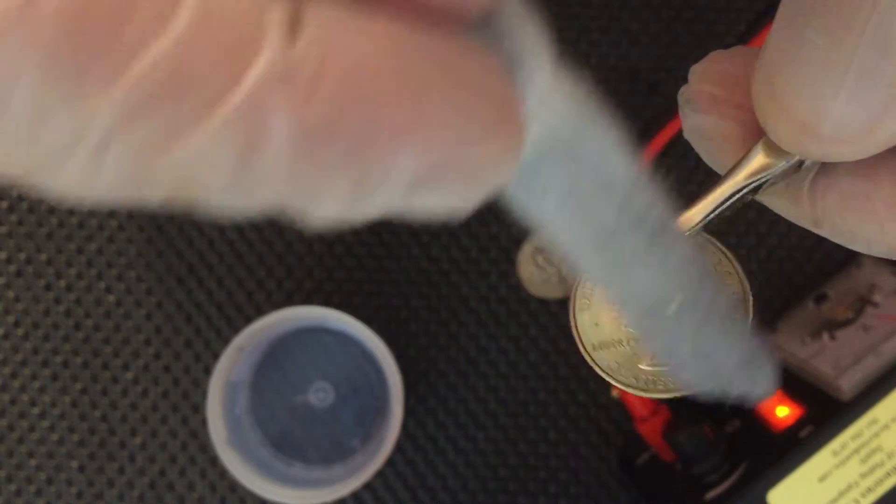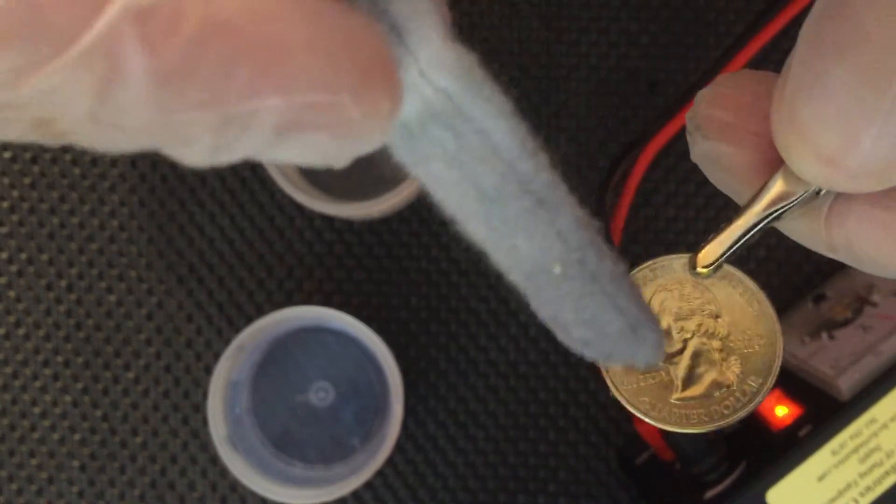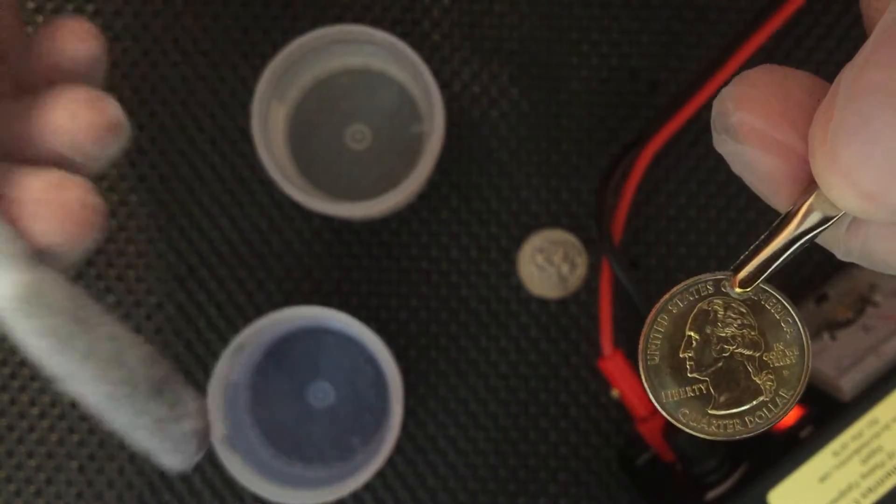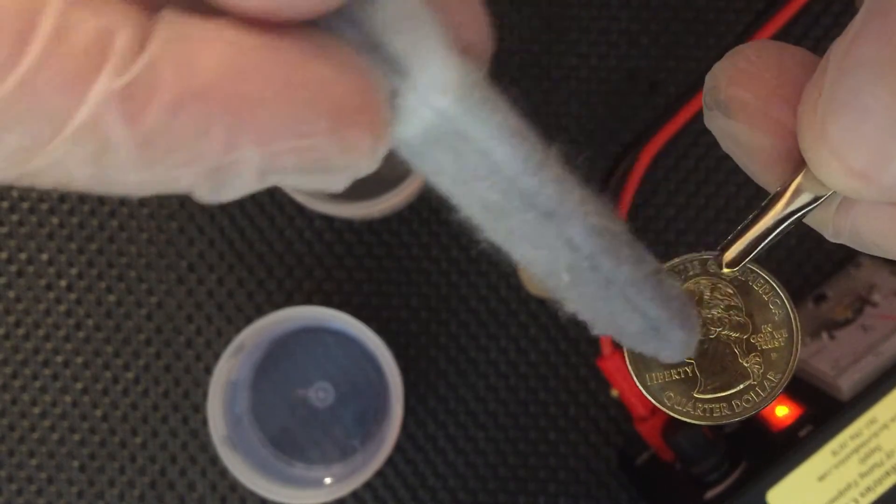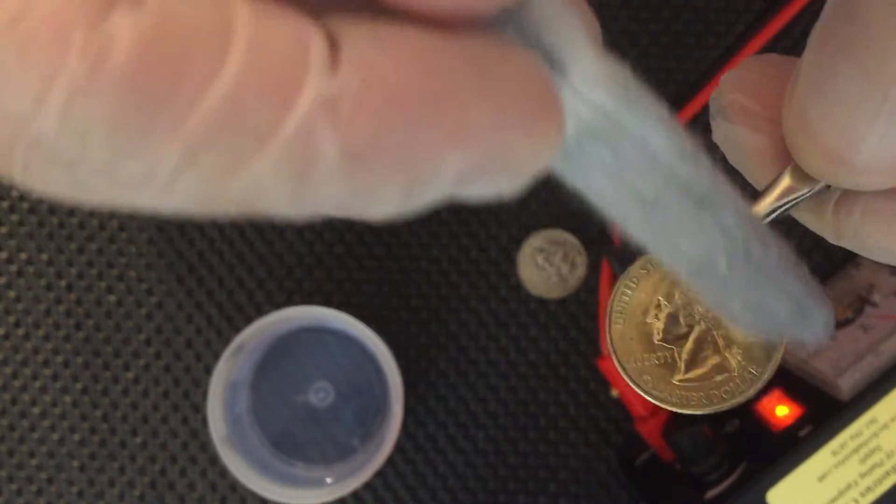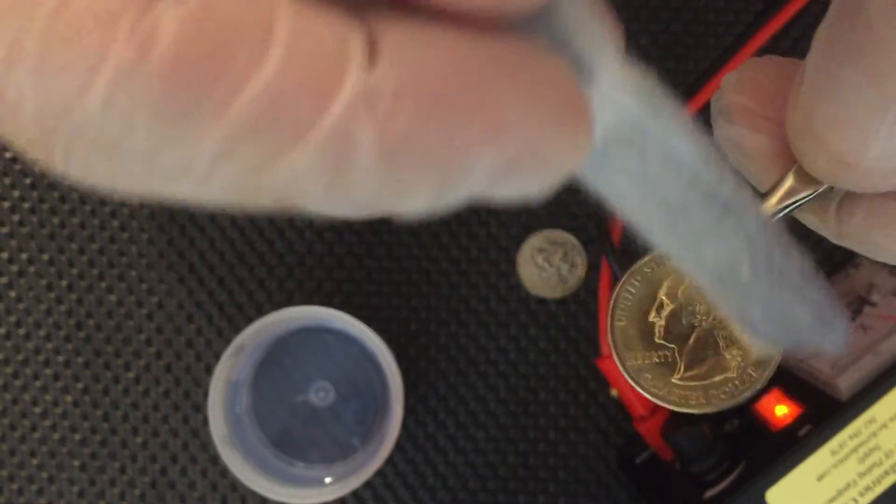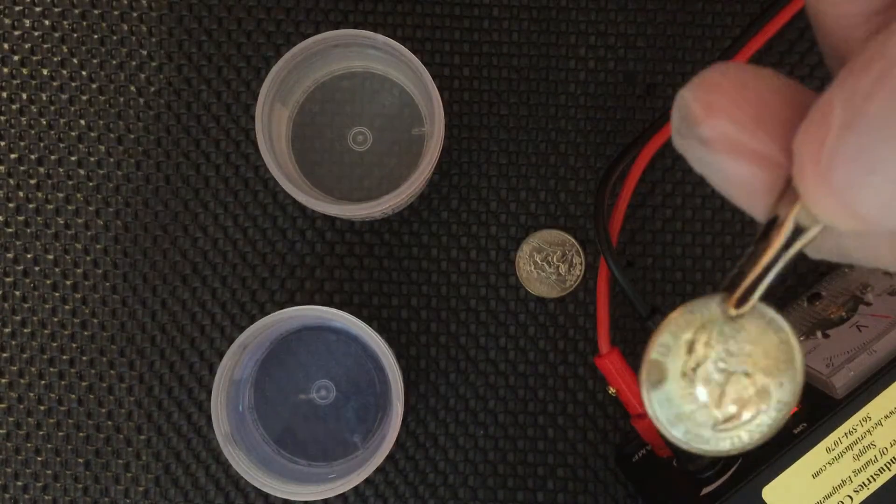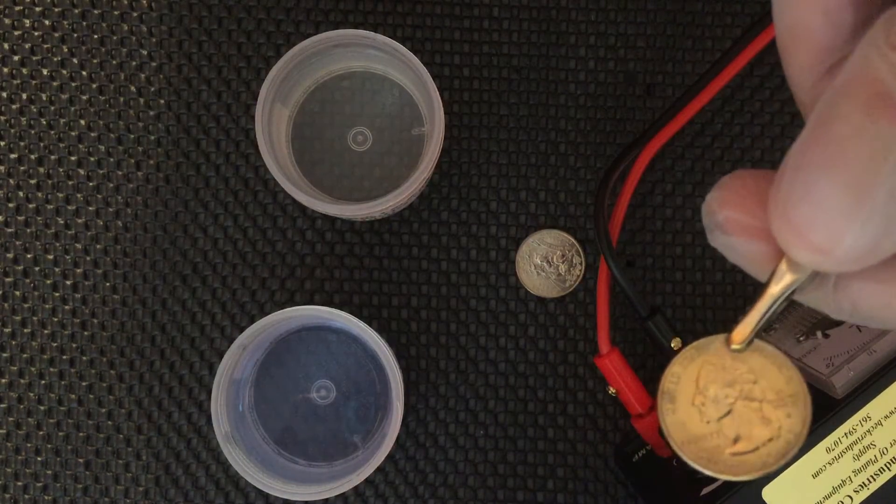Now you can't plate this on aluminum. Aluminum has a different process: you have to zinc-a-date, then copper and nickel plate, and then you gold plate.